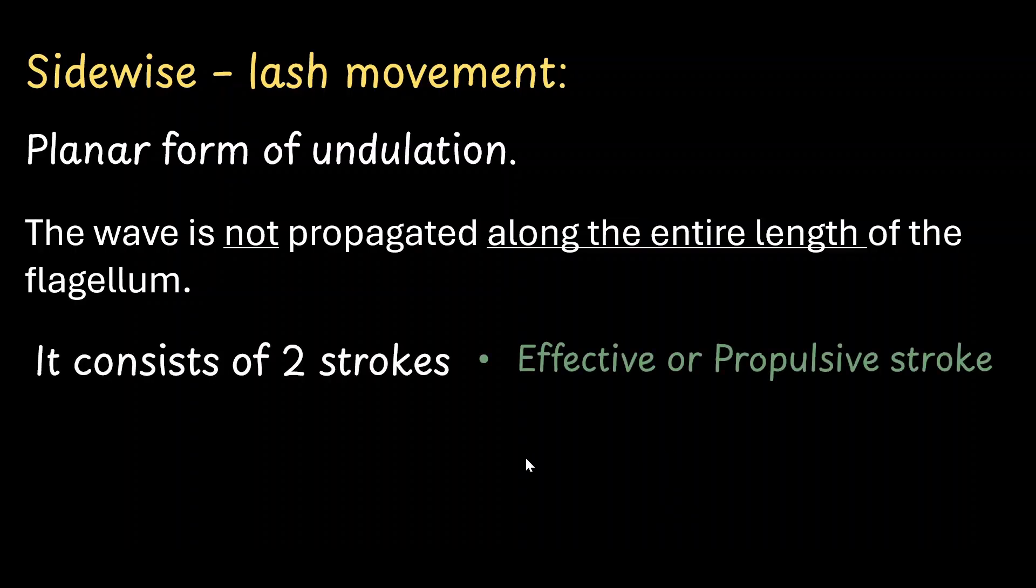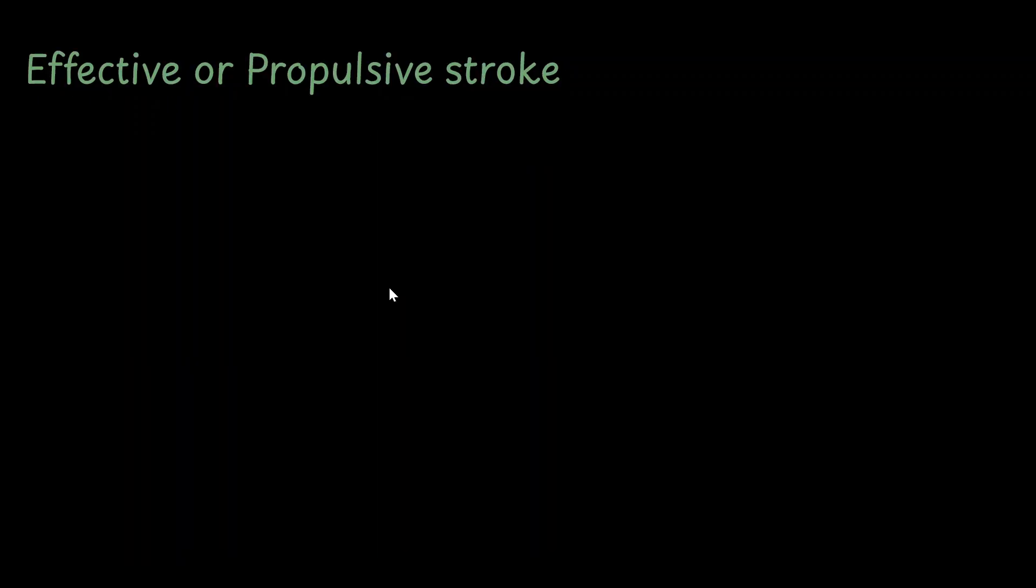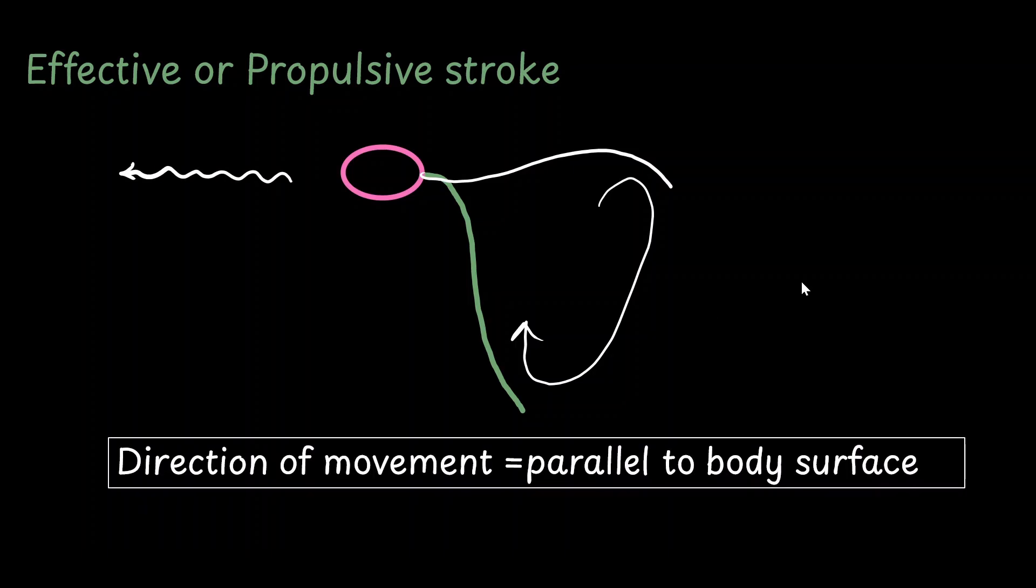It consists of two types of stroke. One is called the effective or propulsive stroke, and the other is called the recovery stroke. The forceful movement is going to happen in the effective stroke. In the effective or propulsive stroke, let's say we have an organism that is moving in this particular direction. So this is the regular undulatory movement of the flagellum. Now before the effective stroke starts, you notice that the flagellum starts becoming rigid, and it starts bending to one side, beating against the water. The water is pushed at a right angle to the axis of the body, and the organism moves forward. So here, the direction of the cell movement is parallel to the body surface.